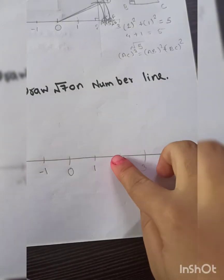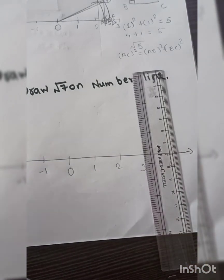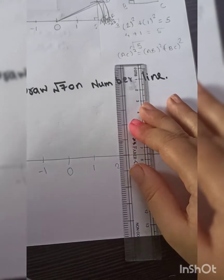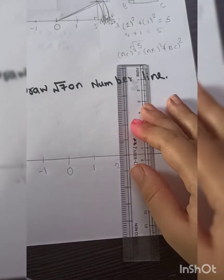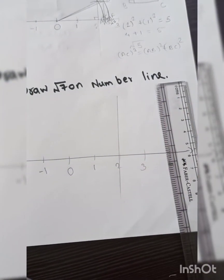So I will draw a perpendicular on the point 2. Why I am doing that is already explained in the video how to draw root 5 on the number line. If you see that video, you will understand why I am drawing the perpendicular on point 2. So this is our perpendicular drawn on point 2.